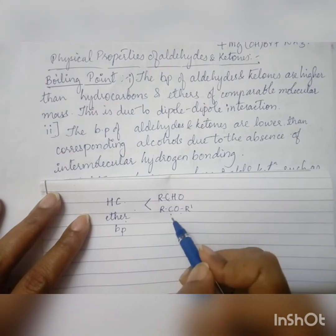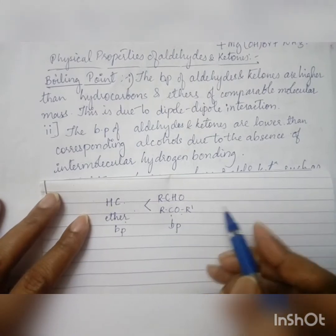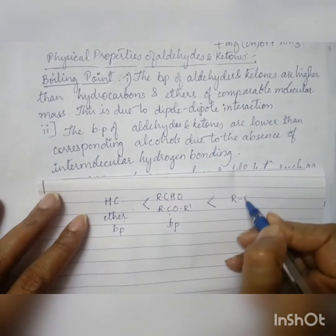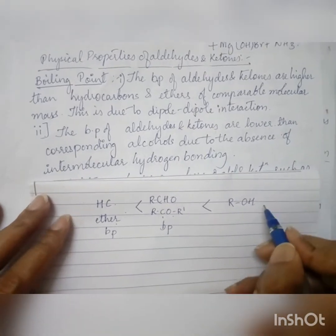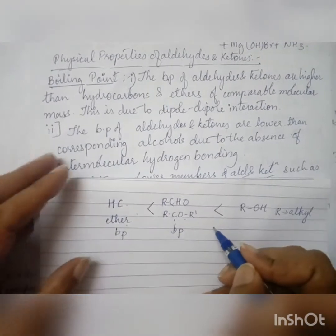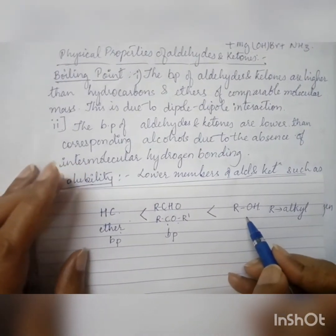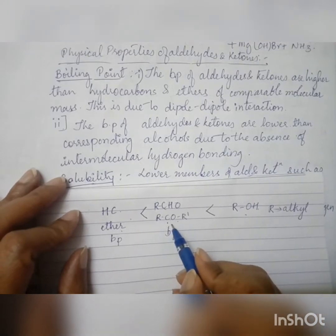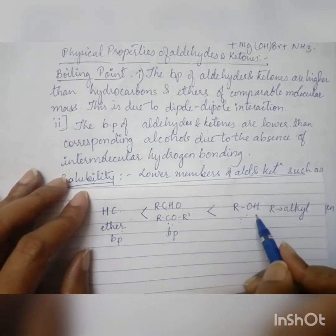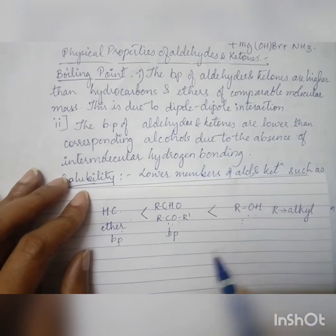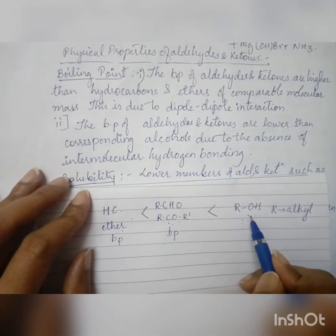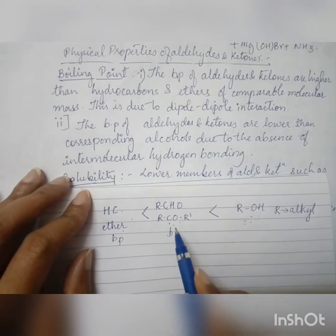In the same way, the boiling point of aldehydes and ketones is lesser than that of corresponding alcohols (ROH, where R is an alkyl group). Compared to alcohols of similar molecular mass, the boiling point of aldehydes and ketones is lesser. This is because in alcohols there is intermolecular hydrogen bonding, which causes the boiling point of alcohols to be greater than that of aldehydes and ketones.